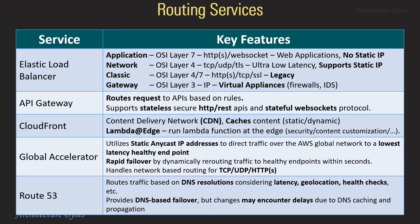Global Accelerator utilizes static anycast IP addresses to direct traffic over the AWS global network. It supports rapid failover by dynamically rerouting traffic to healthy endpoints within seconds. Route 53 is a DNS management service that supports DNS-based failover, which may encounter some delays due to DNS caching.